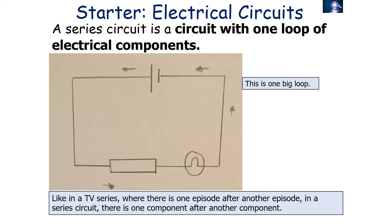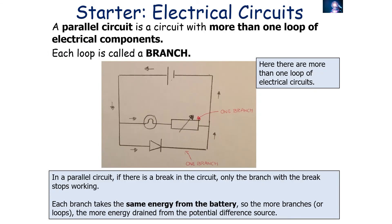Like a TV series where there's one episode after another, in a series circuit there's one component after another. A parallel circuit is a circuit with more than one loop of electrical components, and each loop is called a branch. In a parallel circuit, if there's a break, only the branch with the break stops working. Each branch takes the same energy from the battery, so the more branches, the more energy drain from that potential difference source.